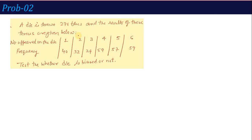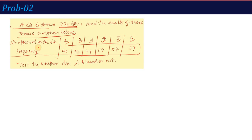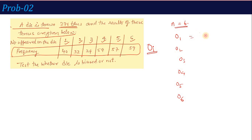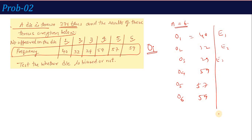Problem 2: A die is thrown 276 times and the results are given. The die can show 1, 2, 3, 4, 5, or 6, so n = 6. The observed frequencies O1 through O6 are the counts for each face. We need to calculate the expected frequencies E1 through E6. H0: the die is not biased — meaning each outcome has equal probability, so the expected frequency for each face is 276 divided by 6 = 46.